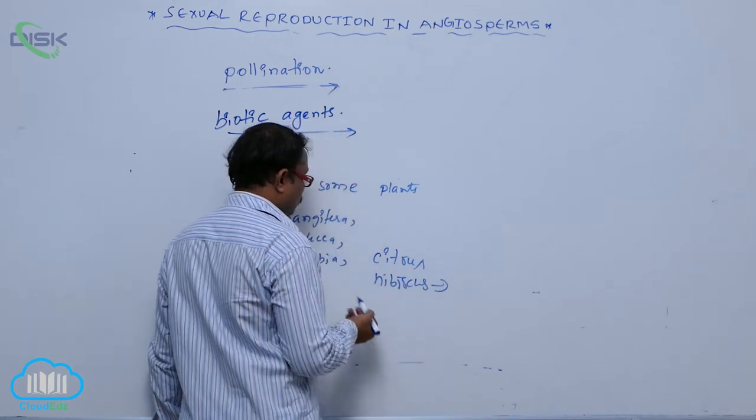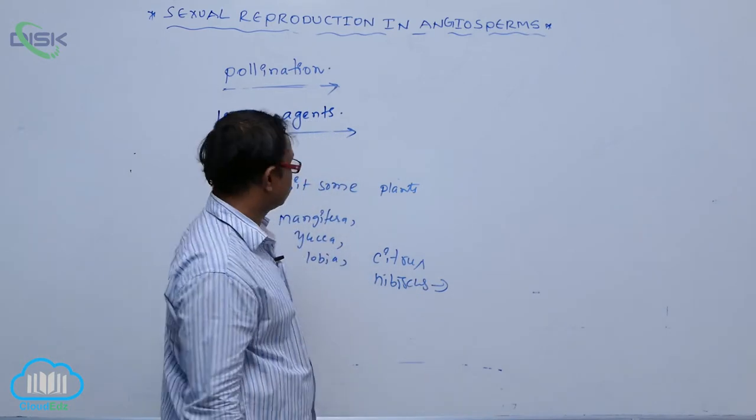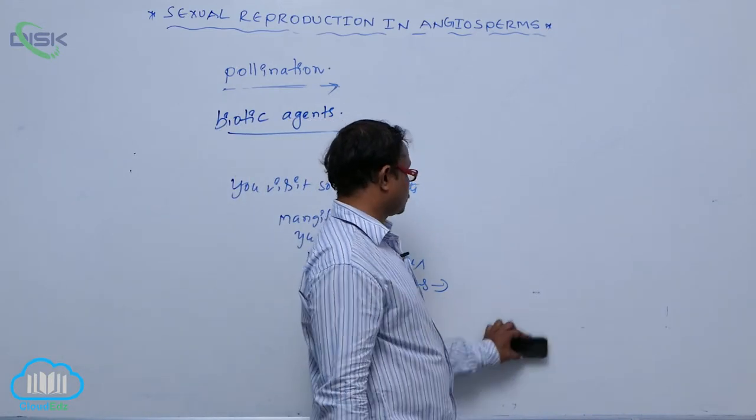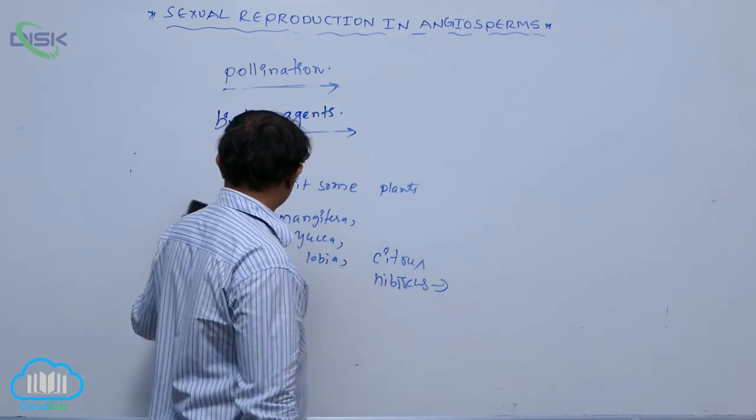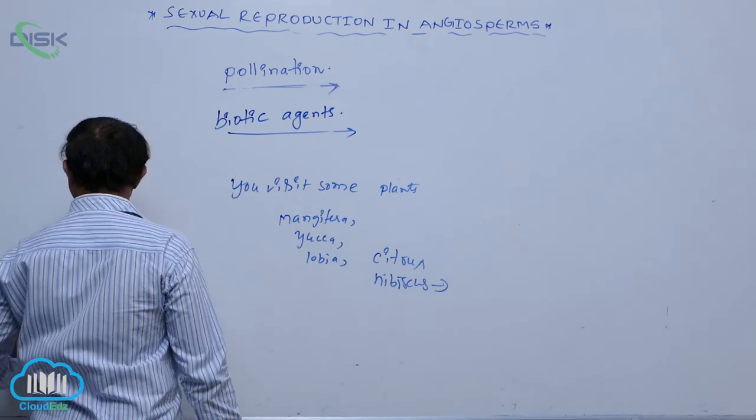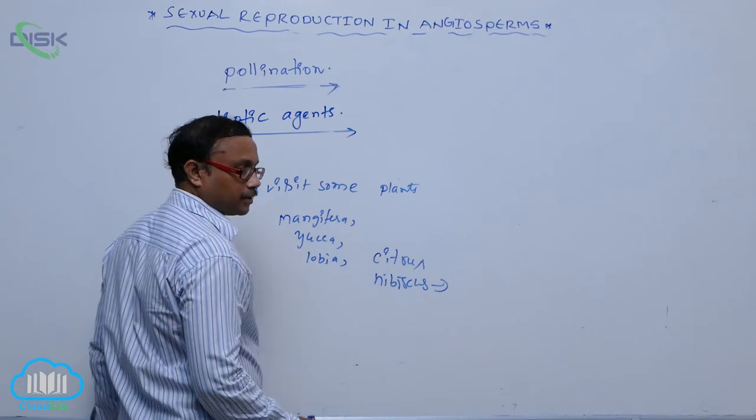So how animals come to flowers for obtaining the nectar, how that pollination is occurring, they can easily identify that.